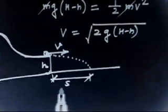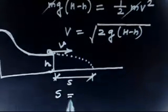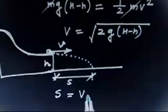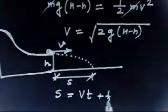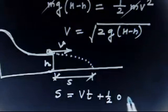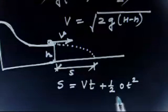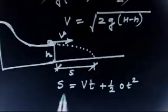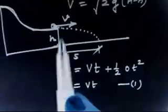Writing the equation in the horizontal direction: distance covered is s, initial velocity is V, acceleration in the x-direction is zero. So s equals V·t. That is the equation in the horizontal direction.